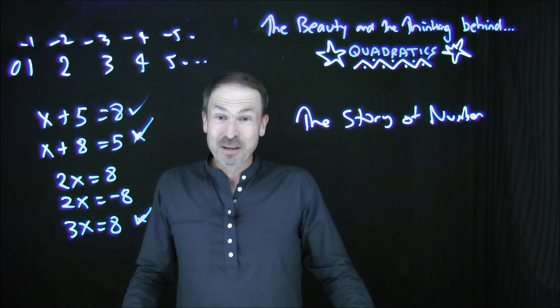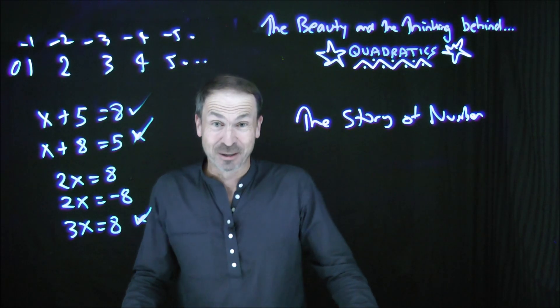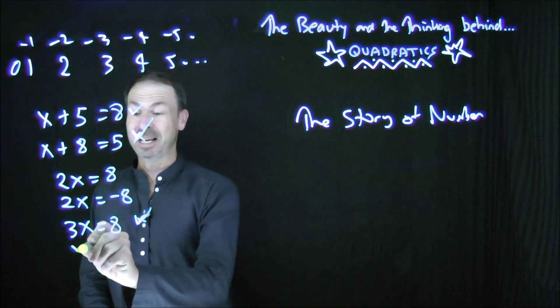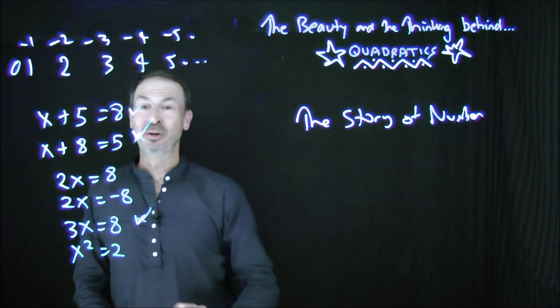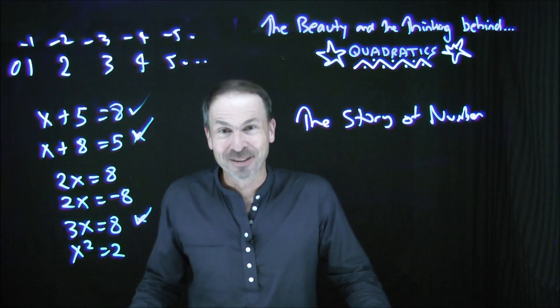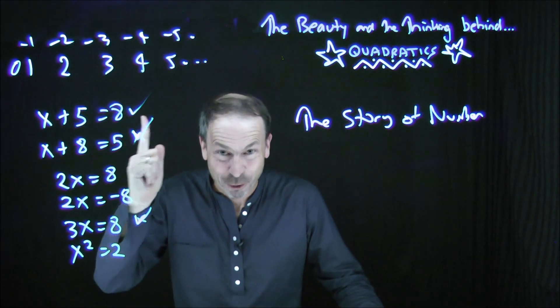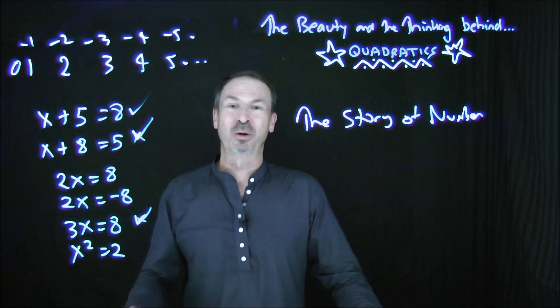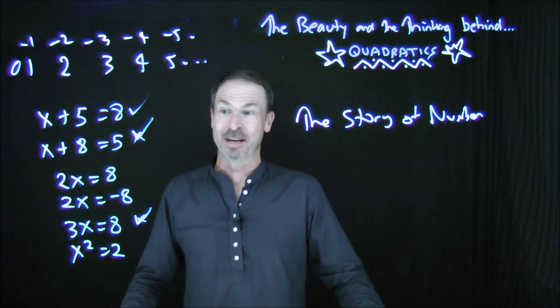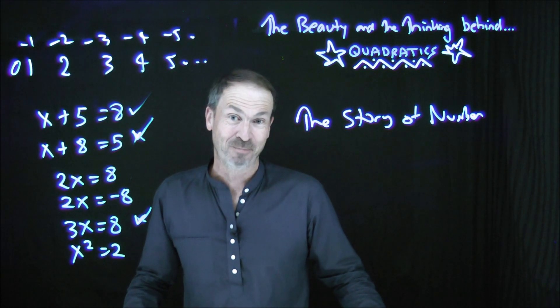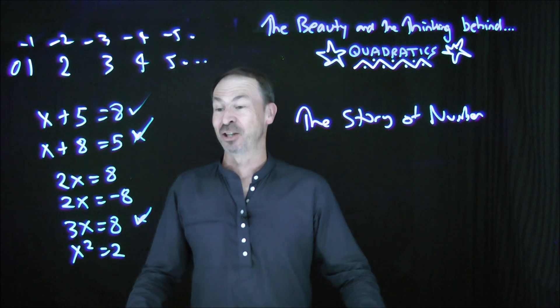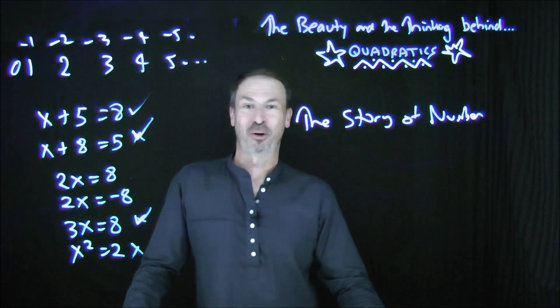Except, you soon discover there's certain equations that can't be solved with fractions. And the classic example is x² = 2. Because it turns out, and it's a bit hard to prove, and it requires proof, it's not obvious, that the square root of 2 is a number that cannot be written as a ratio of 2 integers. Square root of 2 is not a fraction. You cannot solve that equation with fractions.